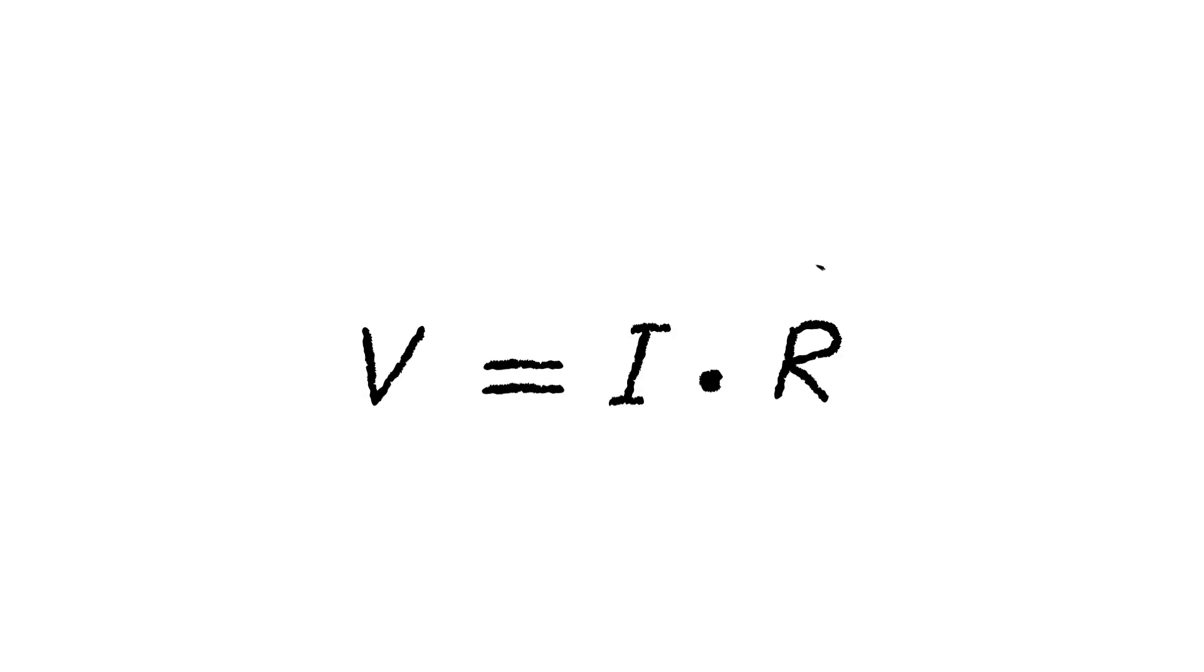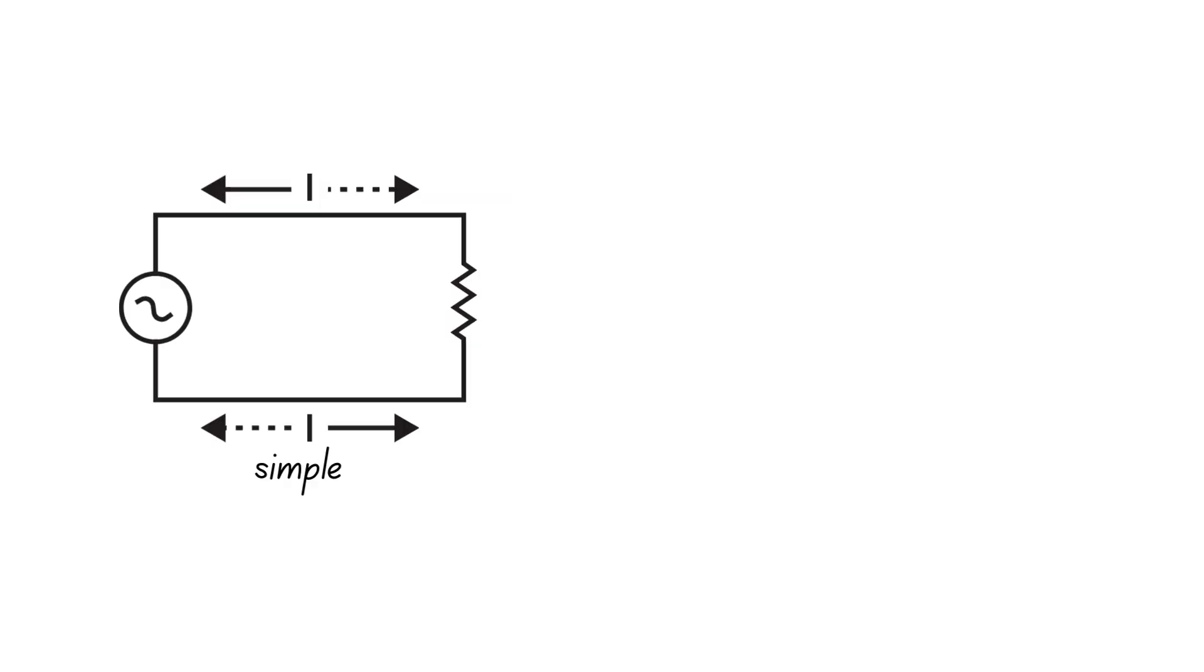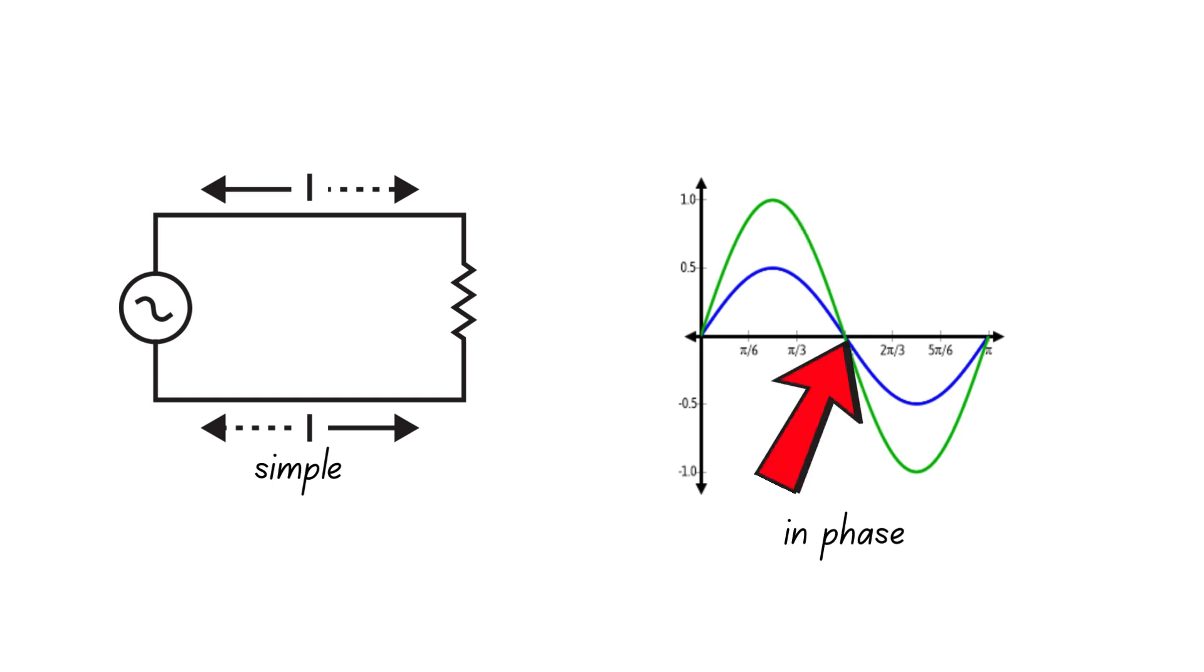By using Ohm's law, we can also graph the alternating voltage against time. For simple AC circuits, current and voltage are always in phase, meaning they reach their maximum and zero values at the same time, all the time.